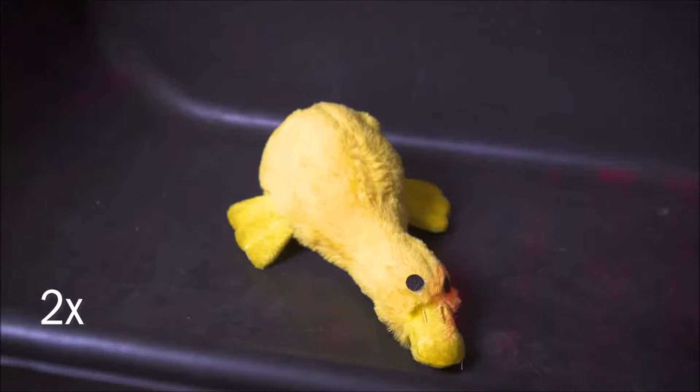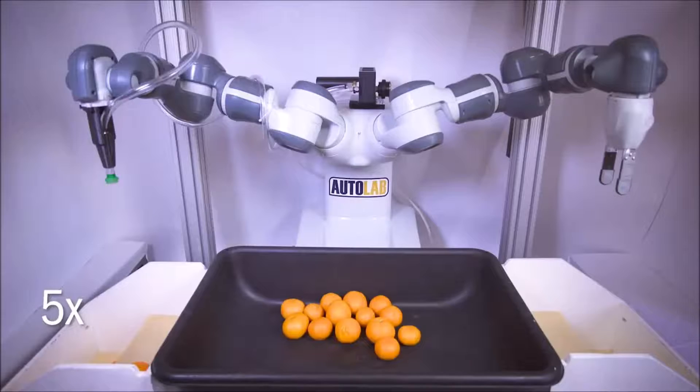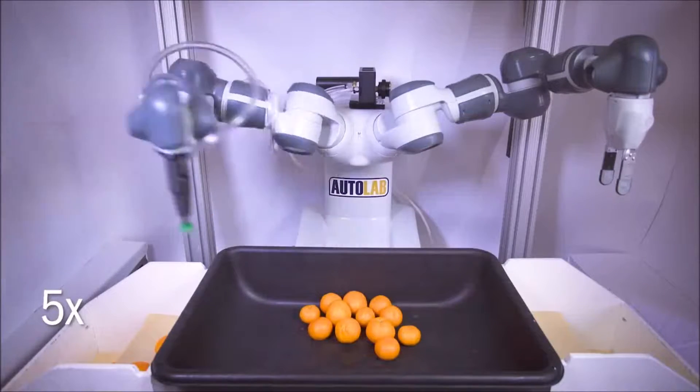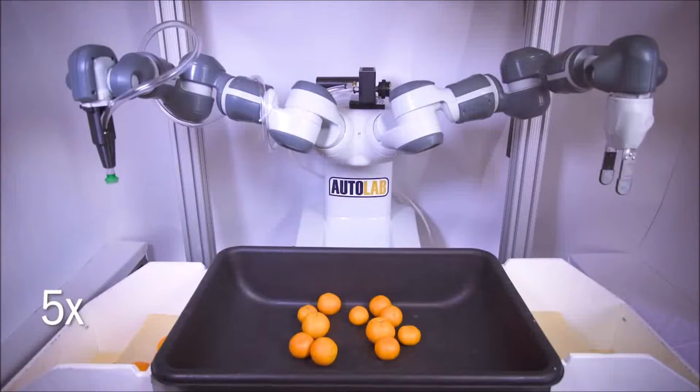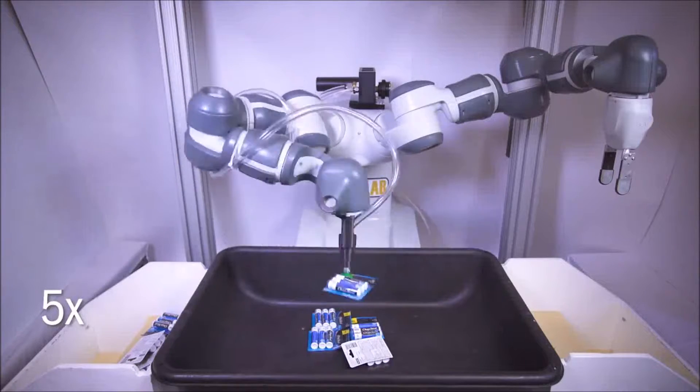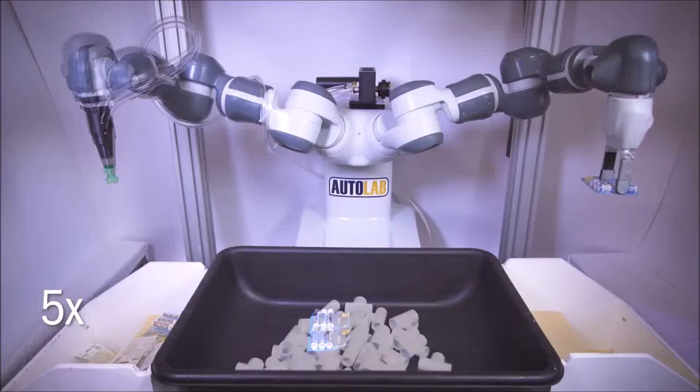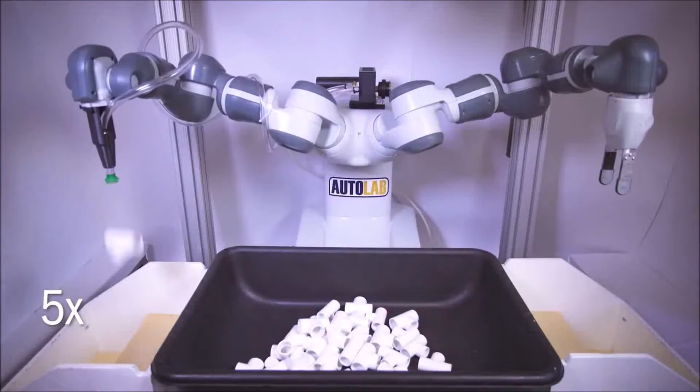To address this problem, we introduce an ambidextrous approach that is compatible with multiple grippers. DexNet 4.0 learns ambidextrous deep-grasping policies by training on synthetic datasets created with structured domain randomization and analytic models of sensors, objects, heaps, and the physics and geometry of each gripper.